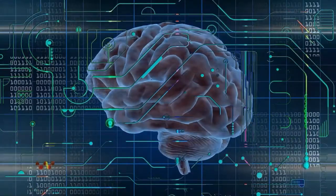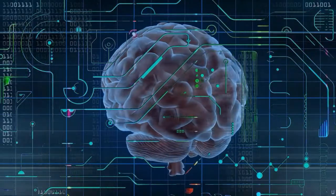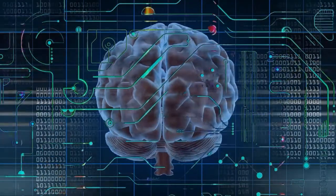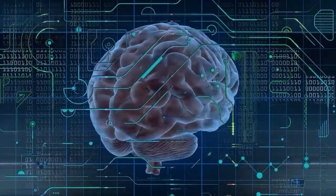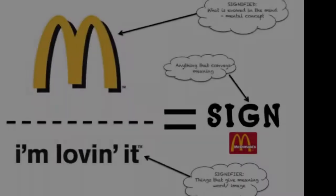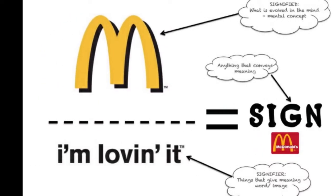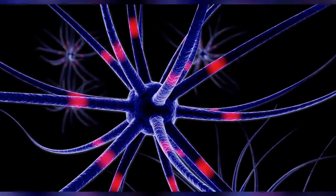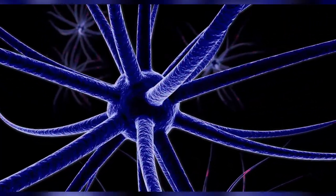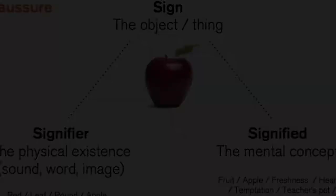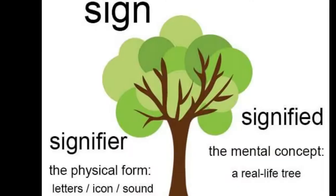The signified is the concept that a signifier refers to — it is the mental concept, or the concept the sign represents. For example, the McDonald's logo on a billboard. In general, the signifier and the signified are the components of the sign itself, formed by the associative link between the signifier and the signified.